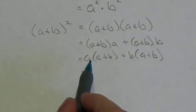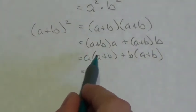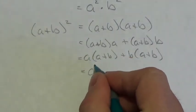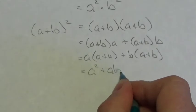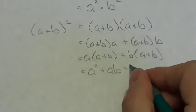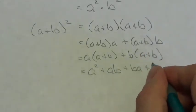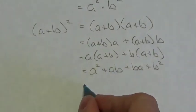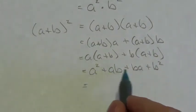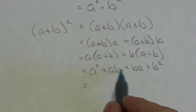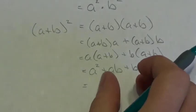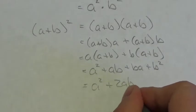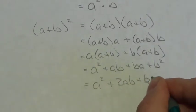And there it is again — I can distribute A to both of those terms. So this becomes A times A, or A squared, plus AB, plus B times A, plus B squared. And now, because order does not matter with multiplication, I can see that these two middle terms are exactly the same, so I will have two of them. This becomes A squared plus 2AB plus B squared.